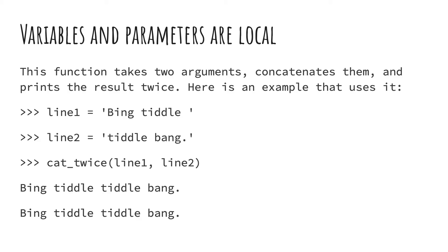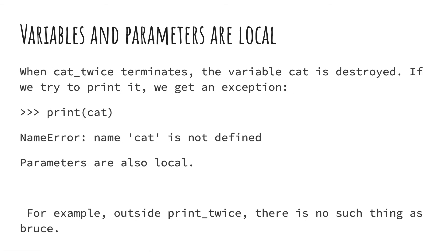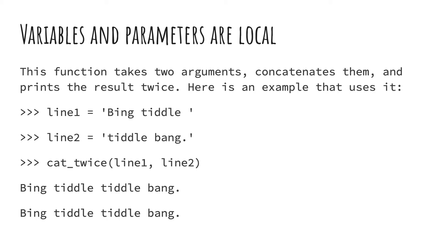And then if we go back to our definition, we notice things. Cat is a variable that's made temporary inside of here. So if you try to access cat outside of that, it won't work. It's going to say it's not defined. So that's a copy of a variable that only exists inside that function, which we called cat_twice.